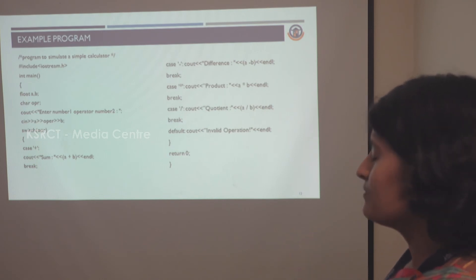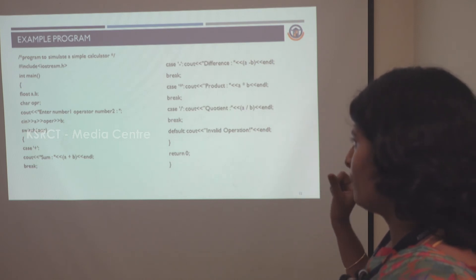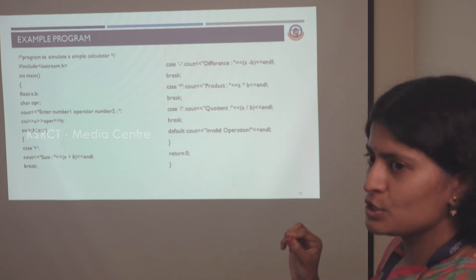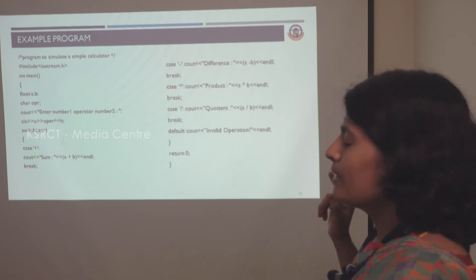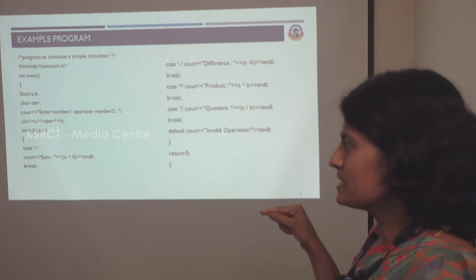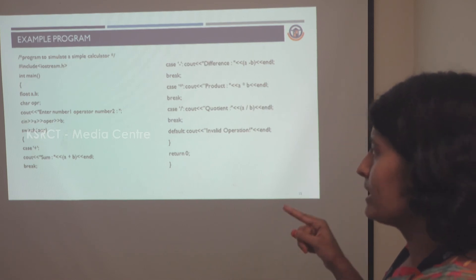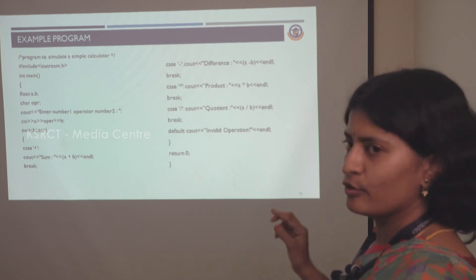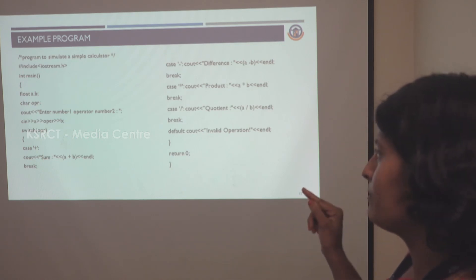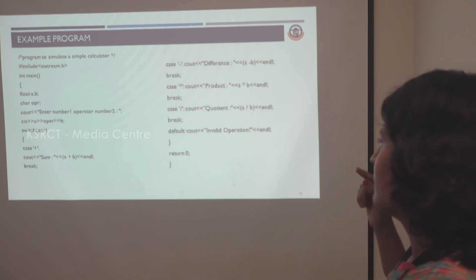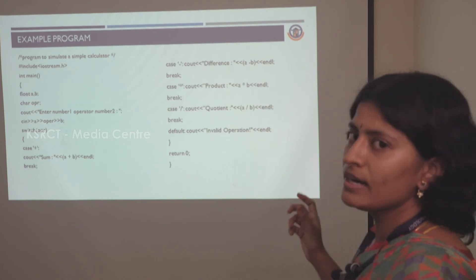This is the sample program for the switch statement. We enter two numbers — value of A and value of B — and the operator to perform. If A is 2 and B is 2, and the user enters the addition symbol as the operator, it enters the switch statement, matches the first case for addition, and prints 'sum: 4.' If the user enters a modulo symbol, none of the cases inside the switch match, so it enters the default block and prints 'invalid operator' and exits the loop.